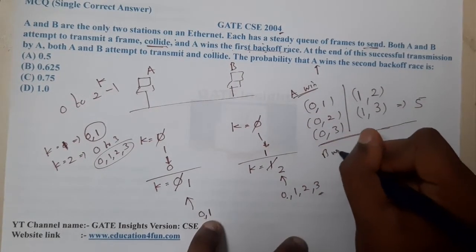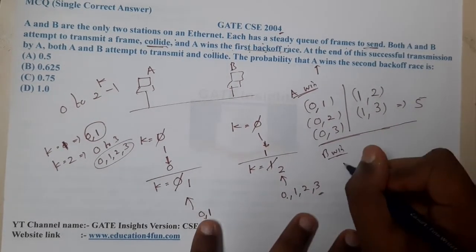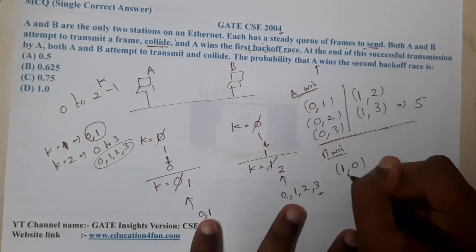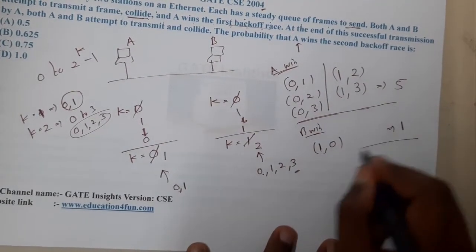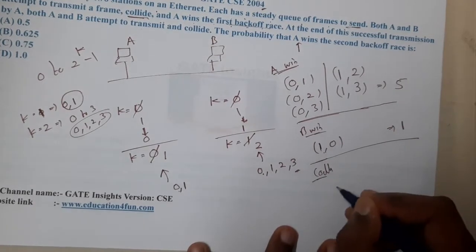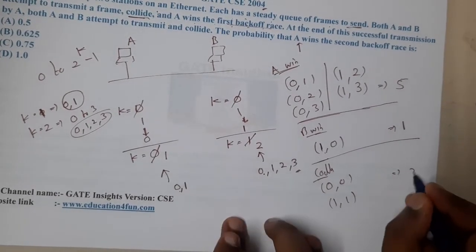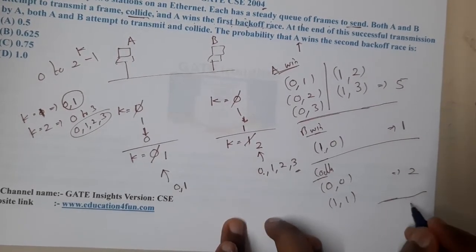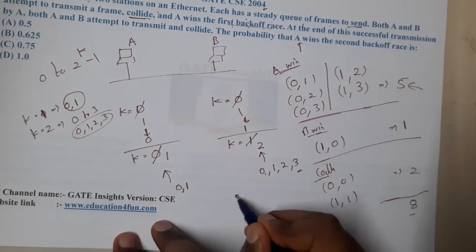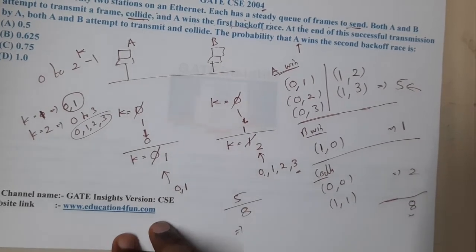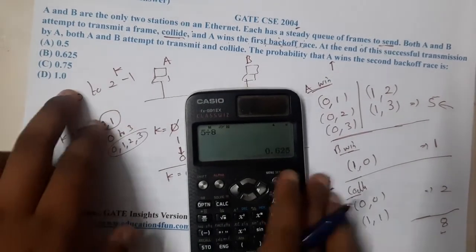Where will B win? When B has the least value — so if A picks one and B picks zero, B wins. That is one case. Collision happens when both pick zero or both pick one — that is two collision cases. Total combinations are 4×4 = 16? No — total is 4×2 = 8. So A wins in five out of eight: 5 divided by 8 equals 0.625.